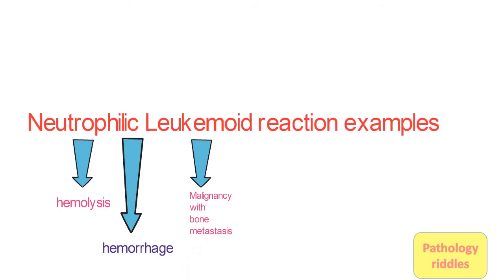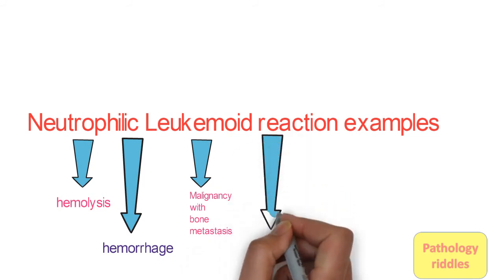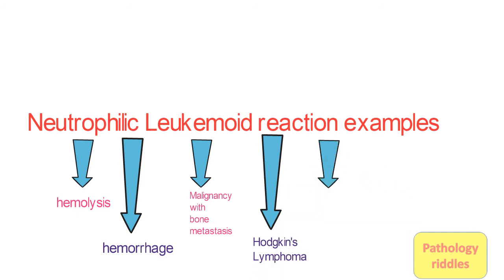In other cases like malignancy with bone metastasis, Hodgkin's lymphoma, we can also encounter this neutrophilic leukemoid reaction. Other causes include myelofibrosis, infections, severe burns, eclampsia, and toxin exposure.